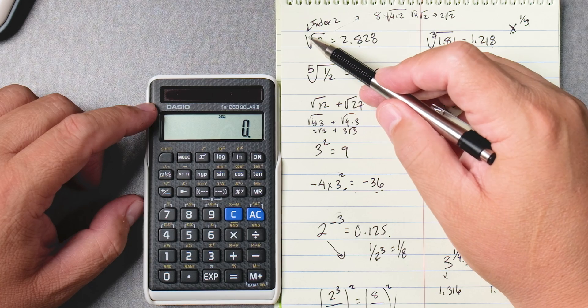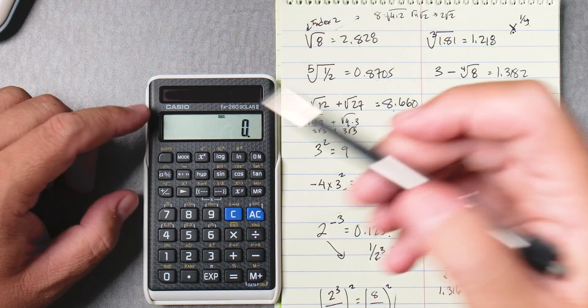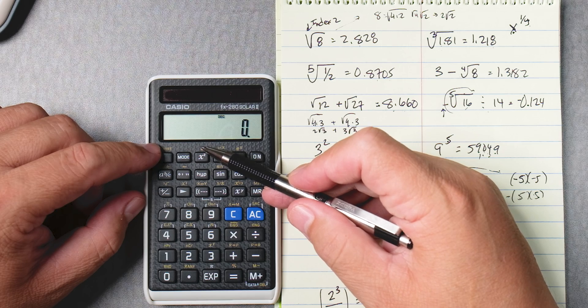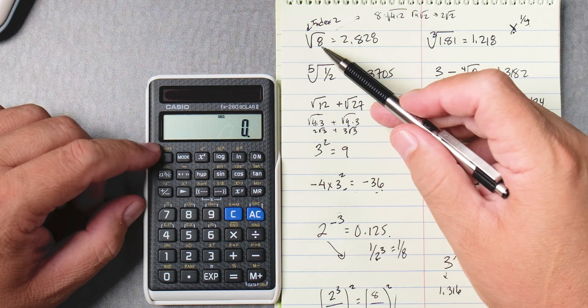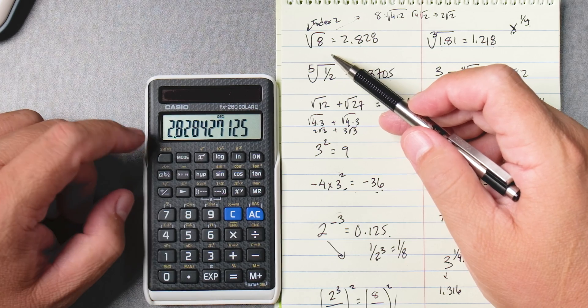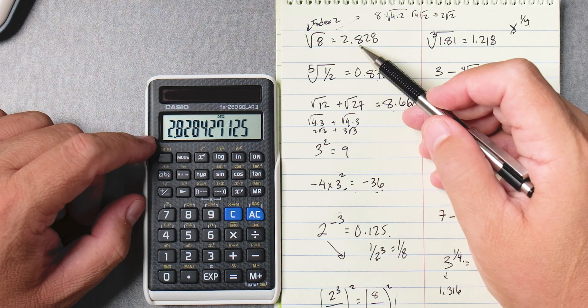Well it doesn't show here but it is there. Okay, on the calculator there is no root 2, just a square root. So to do this problem we just press 8 then shift square root, gives us the answer 2.828.